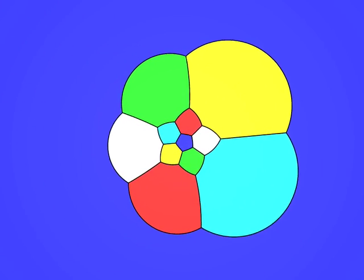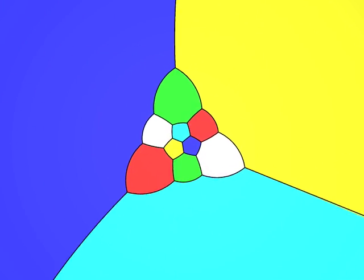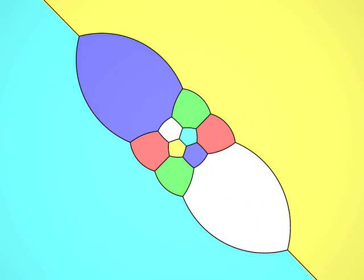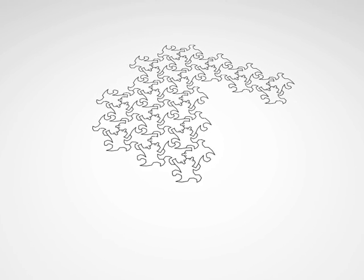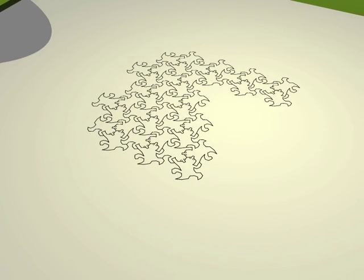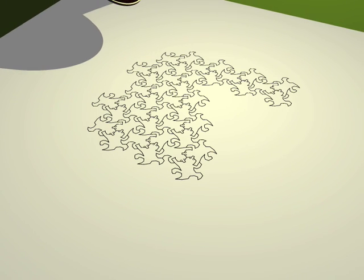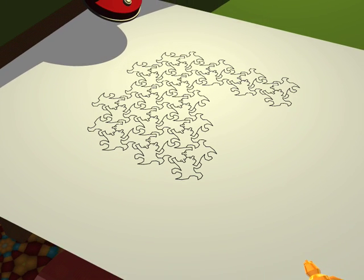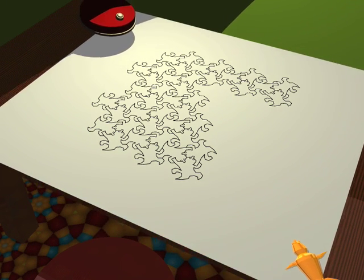These five solids have always fascinated geometers. The Greek philosophers attributed a magical importance to them by associating one of the fundamental elements from which the world is formed to each of them. We call these figures the platonic solids.